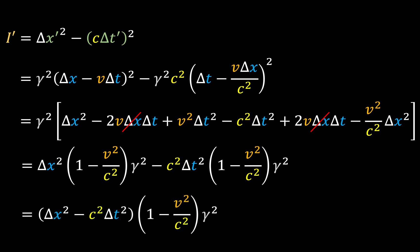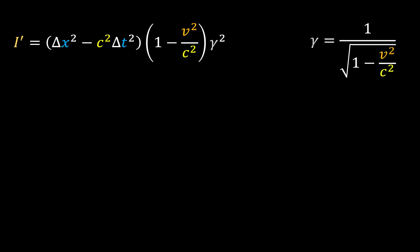And now if we recall the expression for gamma, then it's easy to see that this bit here is just equal to 1, and I' is equal to delta x squared minus c squared delta t squared, which is just equal to I.